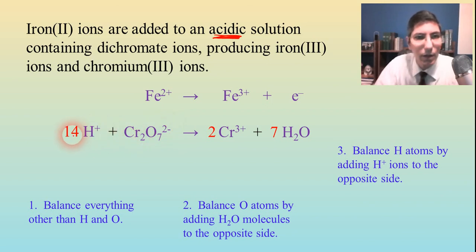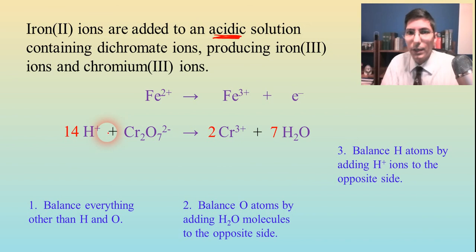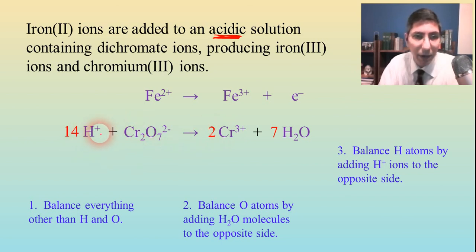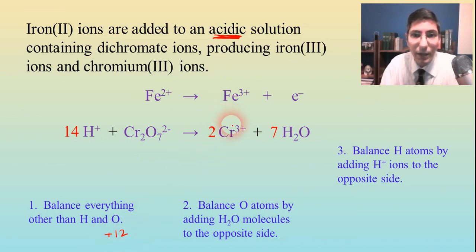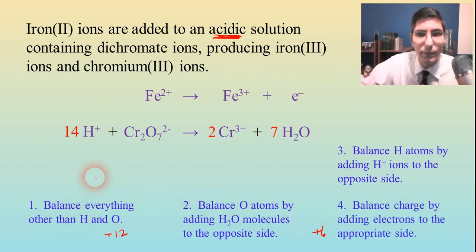Now all our atoms are balanced. We have 14 hydrogens on both sides, seven oxygens on both sides, and two chromiums on both sides. So now we can balance the charge. This is where students have trouble — balancing the charge — because you have to keep track of pluses and minuses. We have plus 14 from the H⁺ ions and a negative two from the dichromate, so on the left side we have a positive 12. On the right side, we have positive six — plus three times two. So we need to add six electrons to the left side to make the charge balance. We balance the charge by adding electrons to the appropriate side.